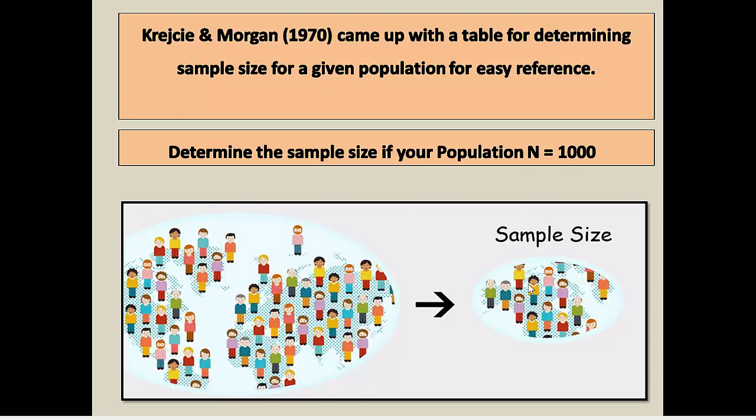As we all are aware, the sample size is the representative of your population. Look at the figure — your population is the big set of all things under your study, and out of that you select a representative sample. Now let us take one example: if our population is 1000, then how do we calculate the sample size? In the Krejcie and Morgan table, your population is denoted by N, so here N is equal to 1000.